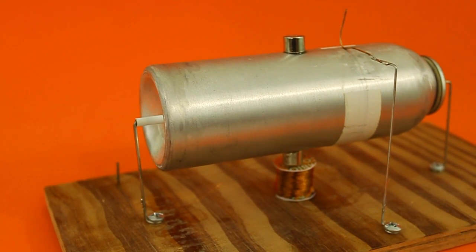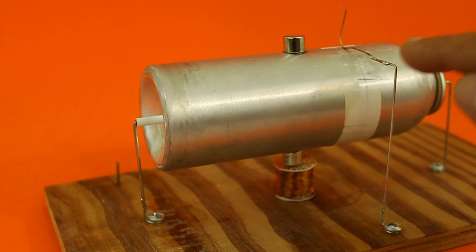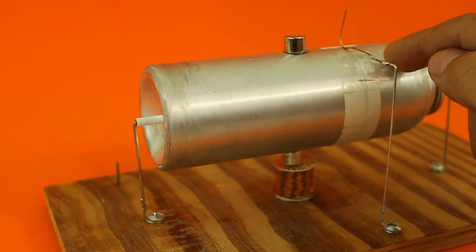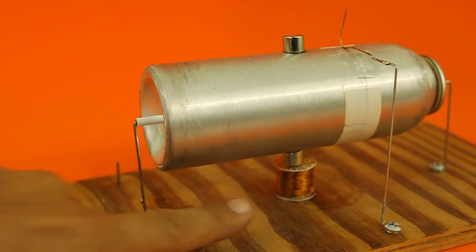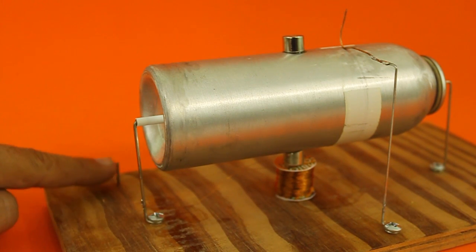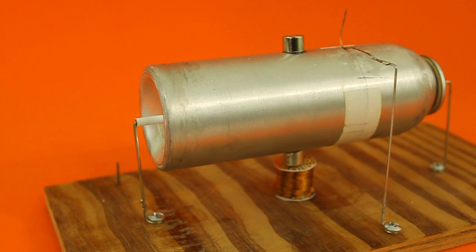So the current enters here by means of the brush, enters the can, from the can to this wire, then to the coil, and from the coil back to the other pole of the input voltage.